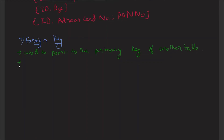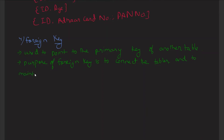The main purpose of the foreign key is to connect tables and to maintain referential integrity.